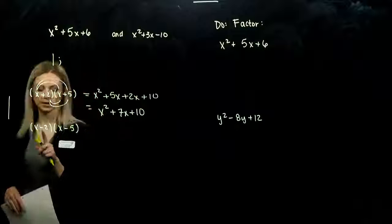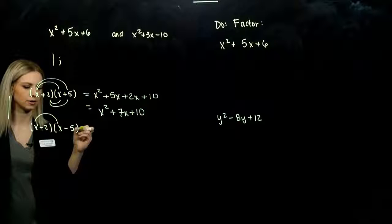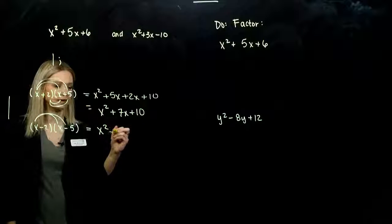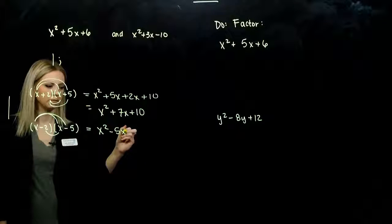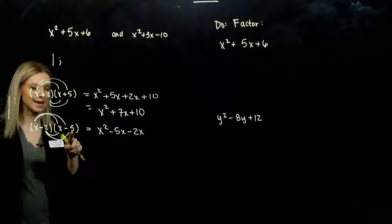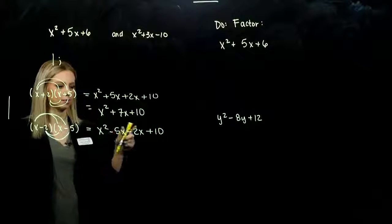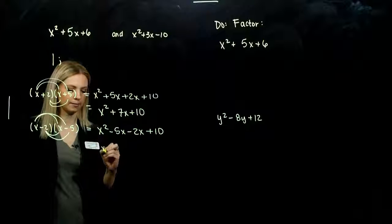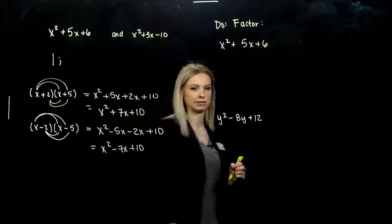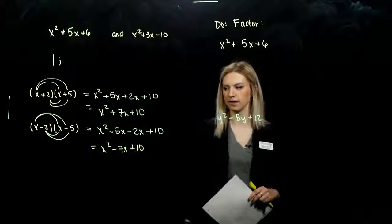Let's look at another one. Same constants, same variable, but I'm changing these signs. So what's going to be different? First gives me x squared — that's the same. Outer, minus 5x. Inner, minus 2x. And the last term: negative 2 times negative 5 gives me positive 10. So these two parts stayed the same, but my middle term, when I simplify, now I have negative 7 factors of x. But again, it still fits that form: x squared plus bx plus c, when our constant is negative in that case.